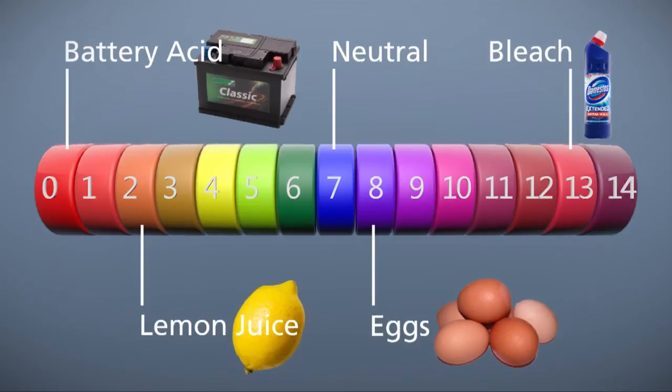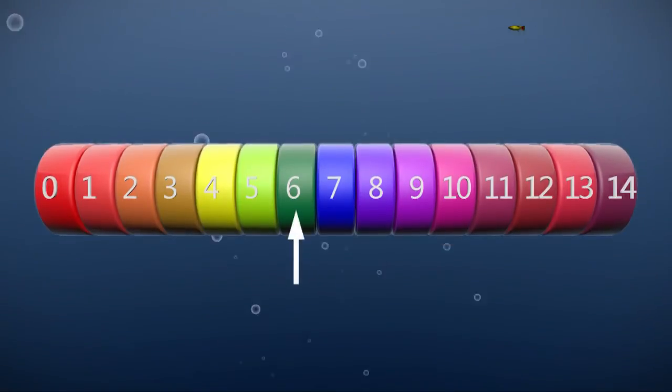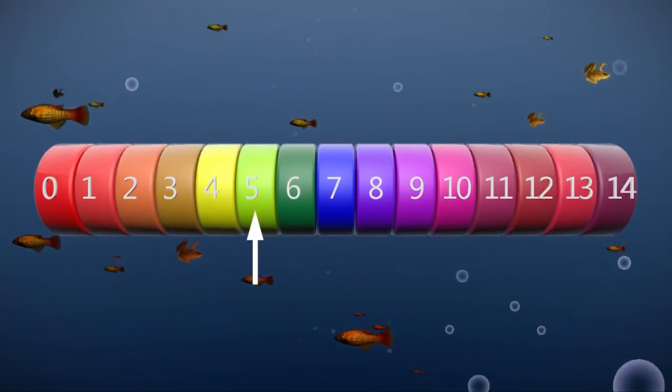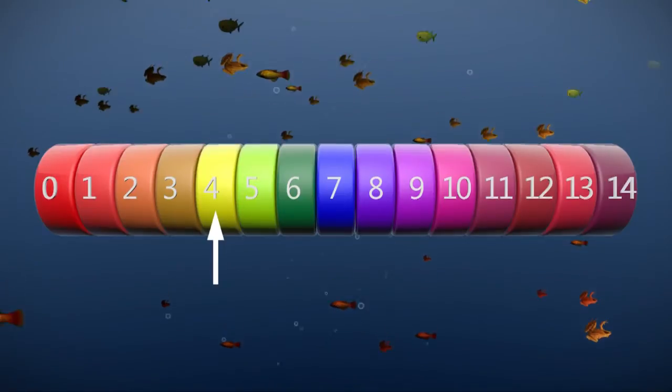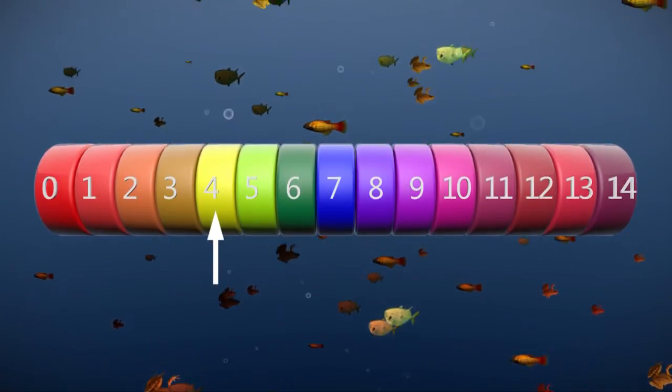It's worth noting that some types of fish start to die at only a pH of 6. Frogs, tadpoles, and some insect larvae die at a pH of 5, and most if not all water life will be dead by a pH of 4.